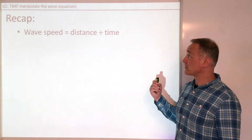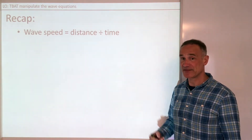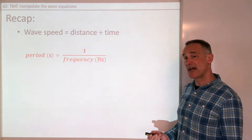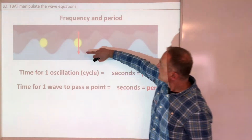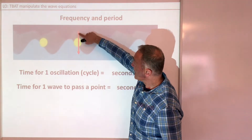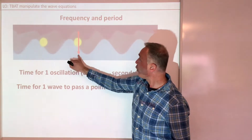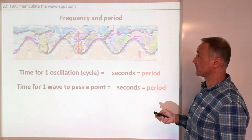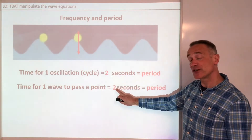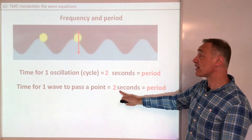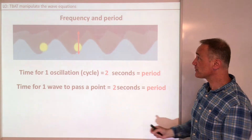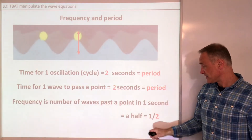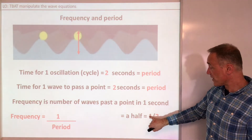So we've looked at wave speed as distance divided by time, and how we measure the speed of sound in air. Our next equation is period equals 1 divided by frequency, which we covered in our first lesson. Period is the time it takes for a particle to do one full cycle, or for one full wavelength to pass a point. On this example it works out at about two seconds — two seconds for one oscillation, the same as the time for one wave to pass. That means only half a wave passes per second, so the frequency is 0.5 Hz, which is one divided by the period.